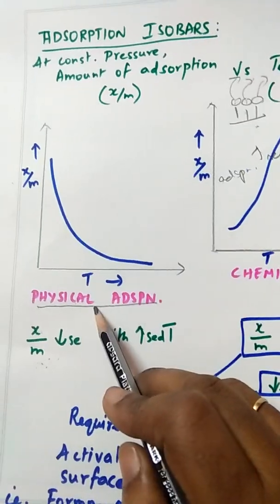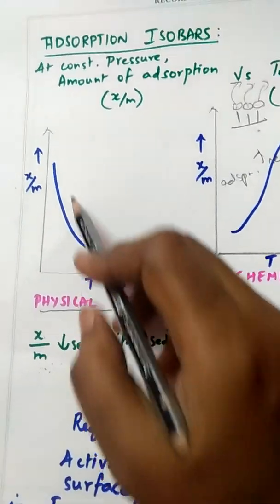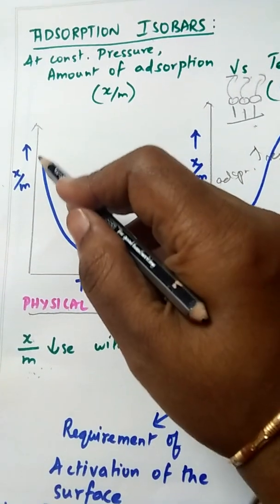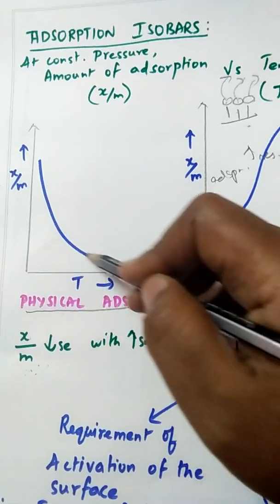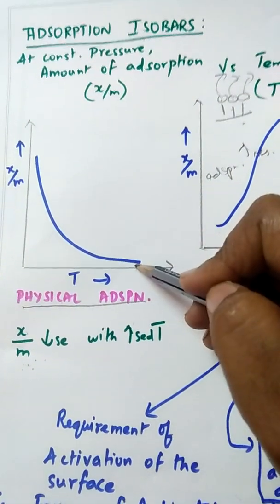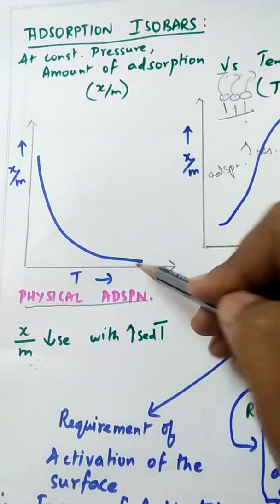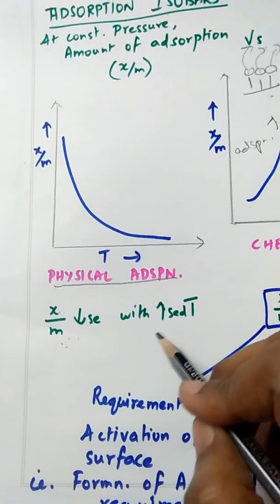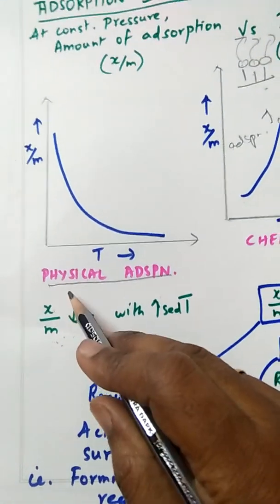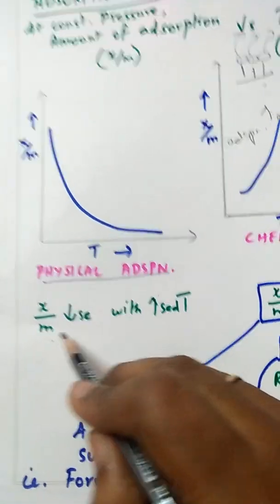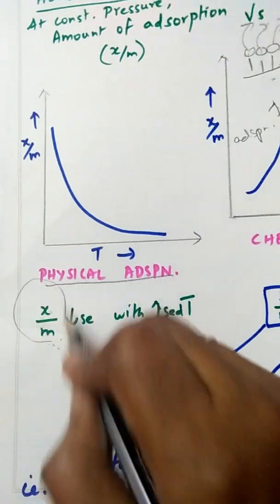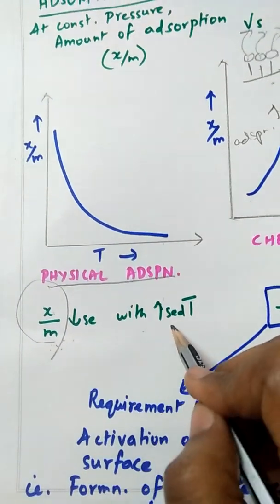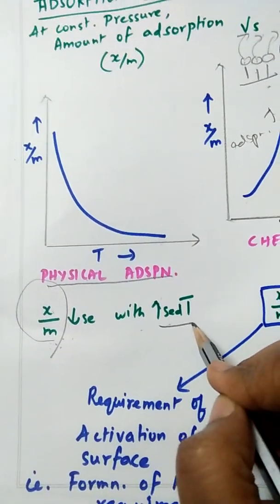For physical adsorption, as the temperature increases, the adsorption decreases. So the amount of adsorption x/m decreases with increase in temperature.